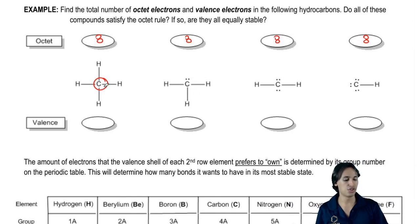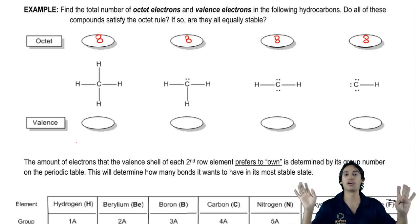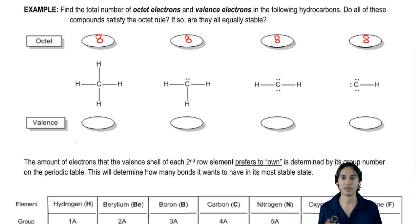So now here's my next question. Do you think that these are all equally stable? Do you think that they could all exist in the same way? And it turns out no, definitely not. It turns out one of these is way more stable than all the other ones. And the reason has to do with valence electrons.